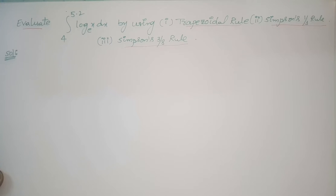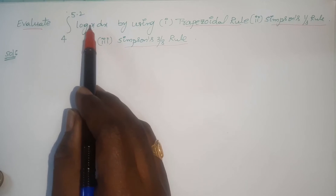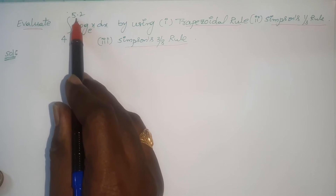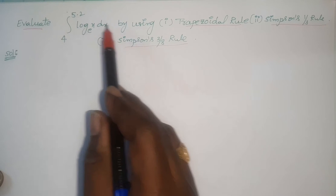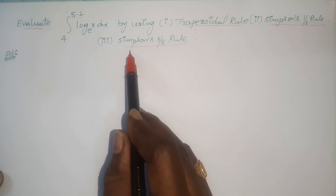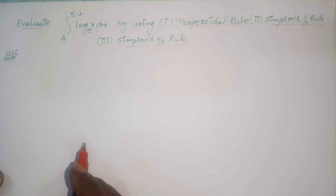Hi everyone, welcome back to our channel. In this video I would like to give another example on numerical integration. See the statement of the given problem: evaluate the integral of log x to the base e dx within the limits 4 to 5.2, by using the trapezoidal rule, Simpson's one-third rule, and Simpson's three-eighth rule.